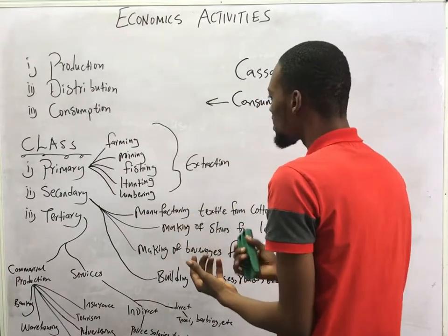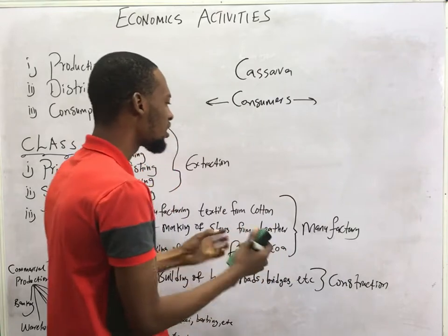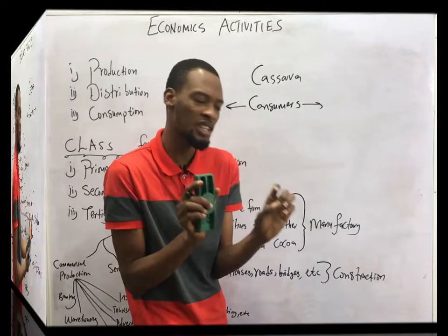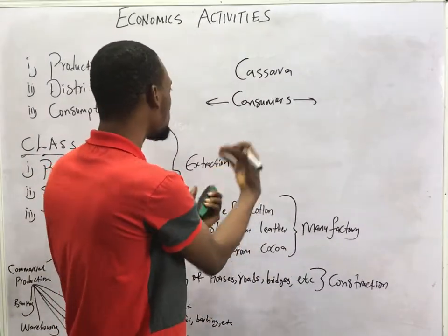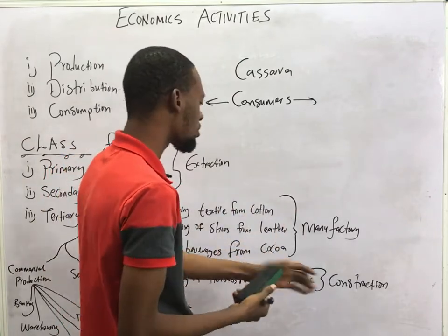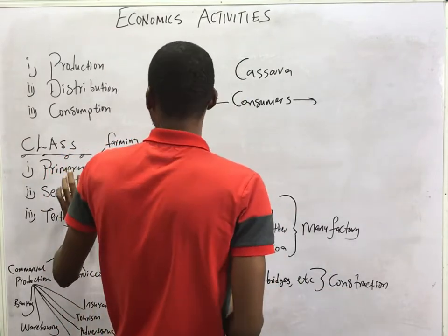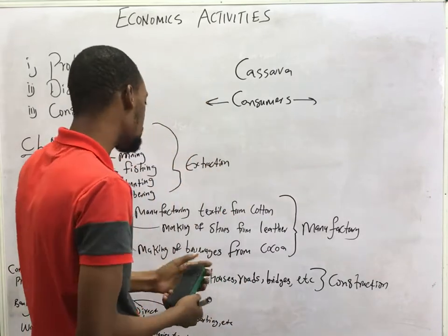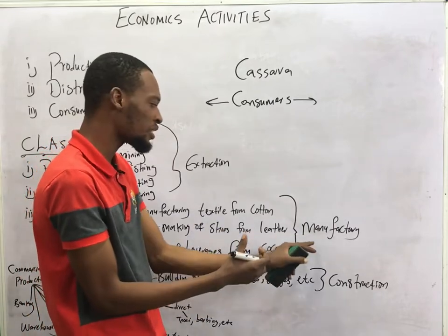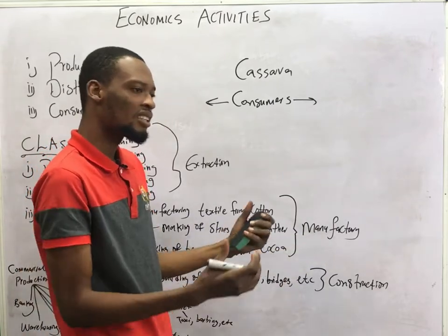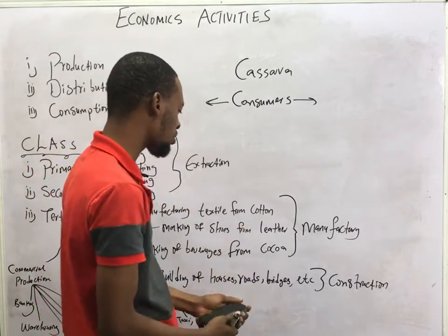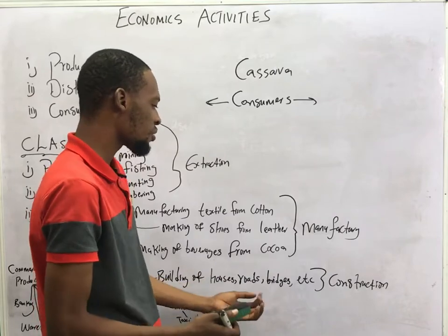Secondary activities deal with manufacturing and construction. In this case, you are converting the raw materials extracted into finished goods. Construction is also under secondary activities in economics. For example, building of houses — you take the raw materials or manufactured goods and assemble them together to form a product. So you construct roads, houses, and bridges.